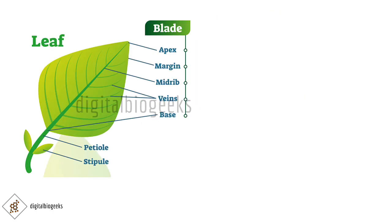A leaf has three main parts: leaf base, petiole, and lamina. A leaf is attached to the stem with the help of the leaf base. The leaf base bears two lateral small leaflet structures called stipules, whose function is to protect the lateral or axillary bud. The green expanded part of the leaf with veins and veinlets is known as the lamina or leaf blade. The middle prominent vein is known as the midrib. These veins provide rigidity to the blade and help transport water, minerals, and food materials to all parts of the leaf.